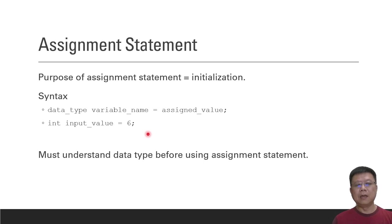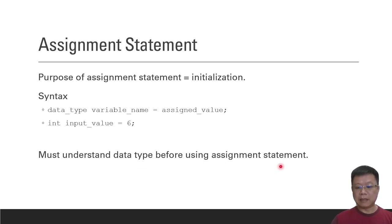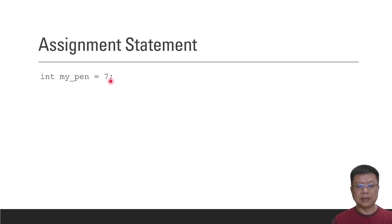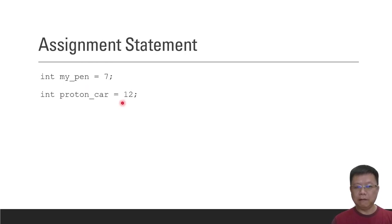You must understand data types before using assignment statements. Here are a few examples: integer my_pen = 7 — we assign seven to my_pen. We also assign a value to protons_my_car.